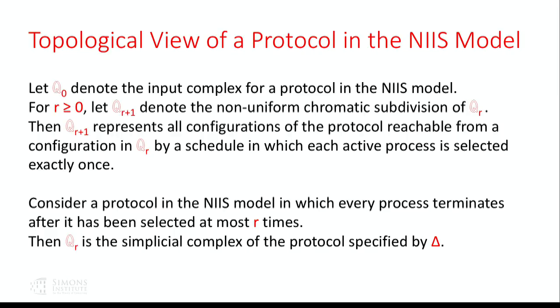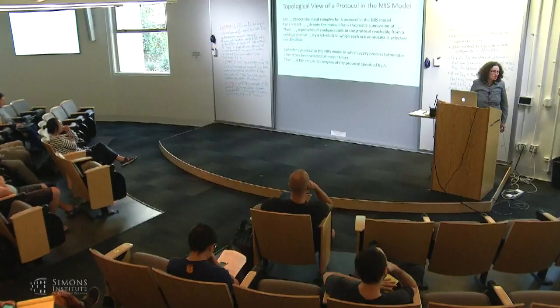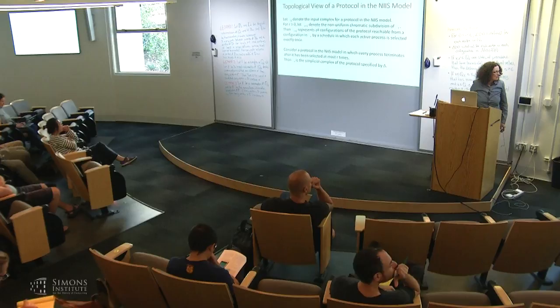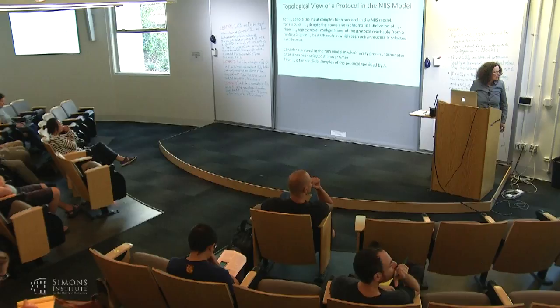Q_r represents all configurations reachable from Q_{r-1} by scheduling each active process exactly once. If a protocol terminates every process after at most R selections, then Q_R is the simplicial complex of the protocol specified by decision map delta. A protocol in the NIIS model is completely specified by delta. Crashed processes explain why we get 'at most' rather than 'exactly' — a process may be scheduled zero times before crashing.